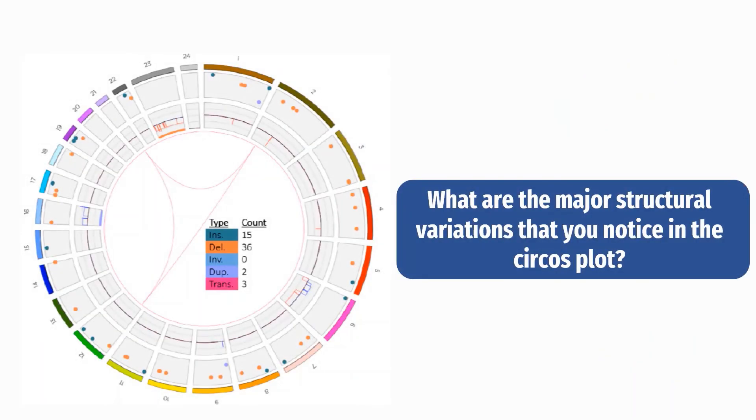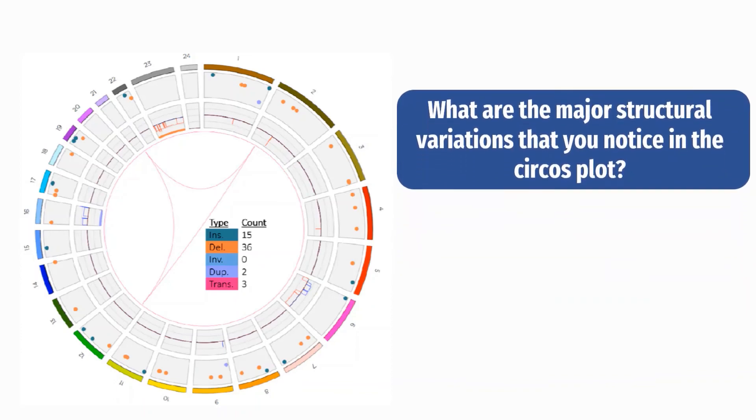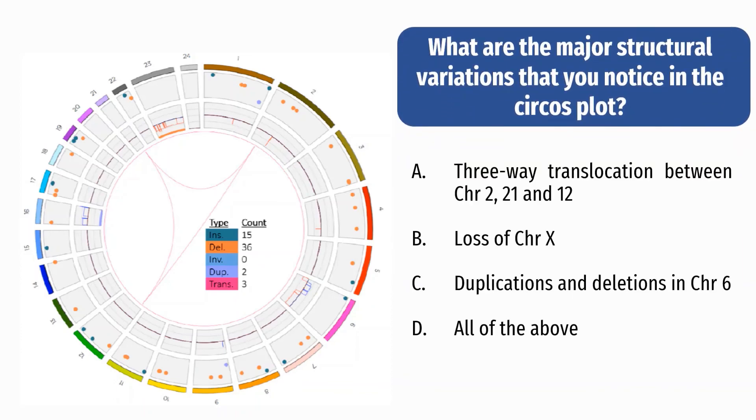What are the major structural variations that you notice in this plot? Is it a three-way translocation between chromosome 2, 21, and 12? A loss of chromosome X? Duplications and deletions in chromosome 6? Or all of the above?